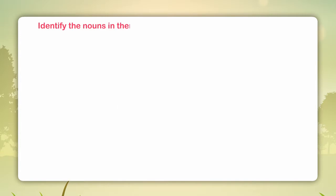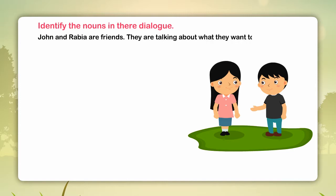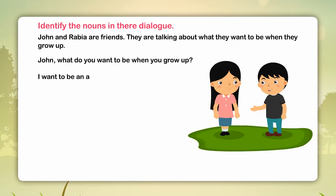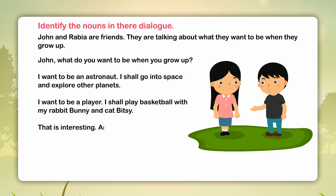Identify the nouns in these dialogues. John and Rabia are friends. They are talking about what they want to be when they grow up. John, what do you want to be when you grow up? I want to be an astronaut. I shall go into space and explore other planets. I want to be a player. I shall play basketball with my rabbit, Bunny, and cat, Bitsy. That is interesting. Are they your friends? Yes, they are. They live on my uncle's farm.